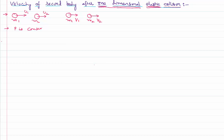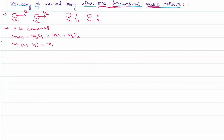Since the collision is elastic, momentum is conserved. I can write the initial momentum of the system as m1·u1 + m2·u2, equal to the final momentum m1·v1 + m2·v2. Rearranging the terms, I can write m1(u1 − v1) = m2(v2 − u2). Let me call this equation number one.